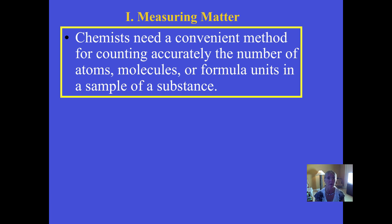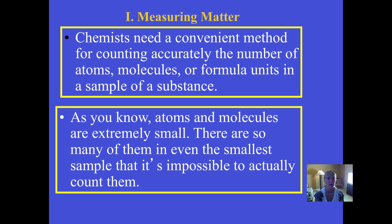The stuff that we're going to count are particles, and those particles could include atoms or molecules. The term 'formula unit' is probably unfamiliar — it's basically like a molecule, but it's the unit of structure we use for ionic compounds. We'll cover more on that later. You could even count moles of ions, which are charged particles that have gained or lost electrons.